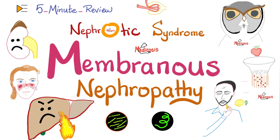If you look at it from an internal medicine standpoint, it's a nephrotic syndrome. If you look at it from a histopathological standpoint, it's a membranous nephropathy because it involves the glomerular basement membrane. This ugly disease is associated with hepatitis, especially hepatitis B virus and hepatitis C. It's correlated with lupus and Hodgkin's lymphoma. Also sometimes syphilis, malaria, and schistosomiasis.